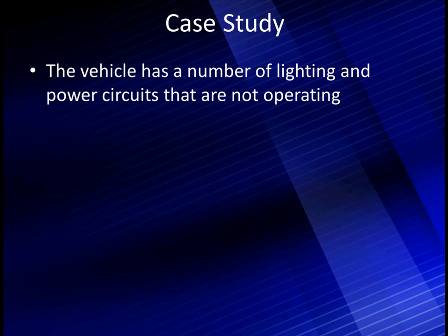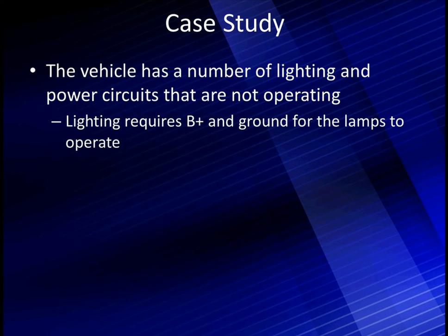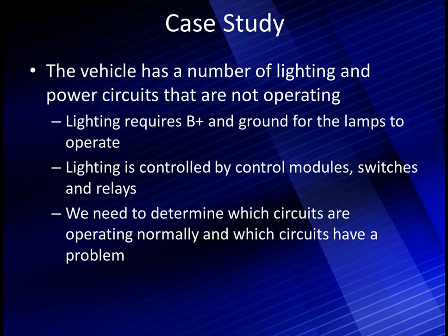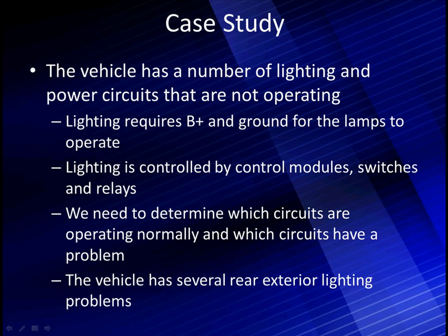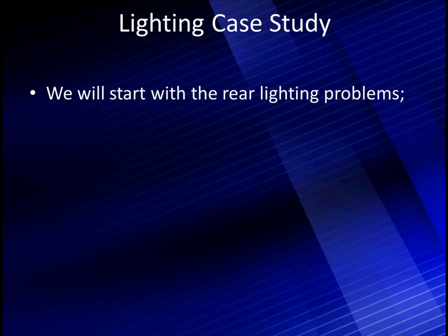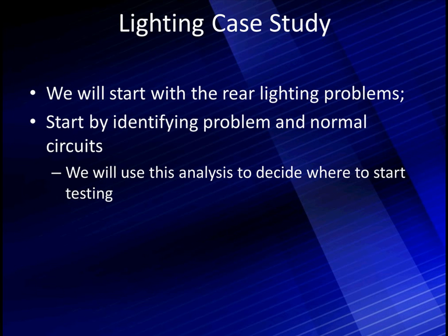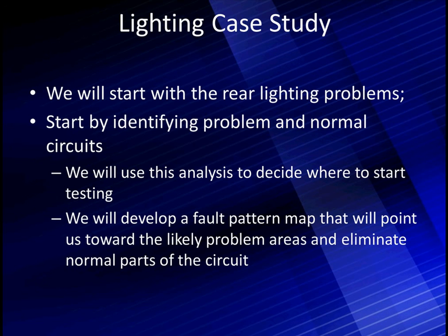So let's talk about our case study. This vehicle has a number of lighting and power circuits that are not operating properly. The lighting requires B-plus and ground for the lamps to operate properly. The lighting is controlled by control modules, switches, and relays, and we need to pay attention to those during our mapping. We'll need to determine which circuits are operating normally and which have a problem, because the problem circuits will map us toward the common areas. The vehicle has several rear external lighting problems along with some power receptacles — we'll cover those later. We'll start with the rear lighting problems. We will develop a fault pattern map that will point towards the likely problem areas and eliminate the normal parts of the circuit.